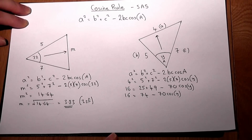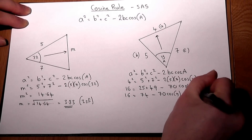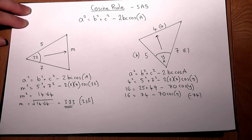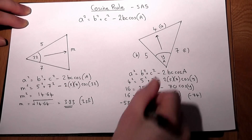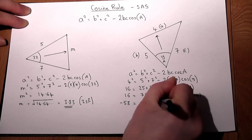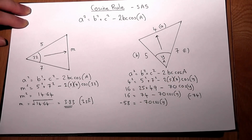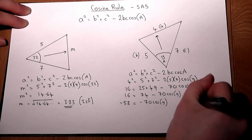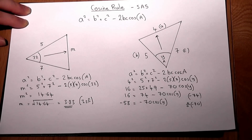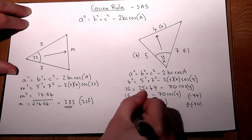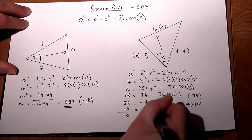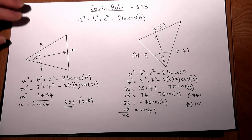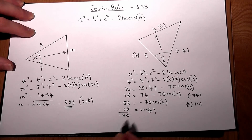We want to get Y by itself, so step one is to work out what cos Y equals. If I take away 74 from both sides, I end up with minus 58 equals minus 70 cos of Y. Then divide by minus 70, so I get minus 58 over minus 70 equals cos of Y. That is my equation for cos Y.